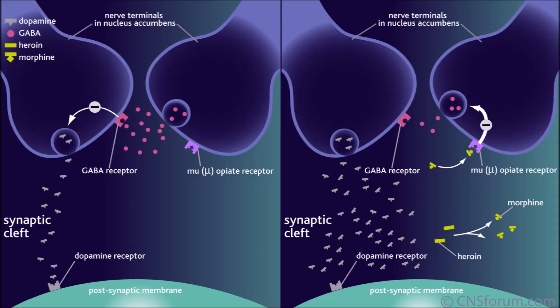The presynaptic neuron contains GABA neurotransmitters in its synaptic vesicles. The opioid receptor is attached to this presynaptic neuron containing the GABA. There are three types of opioid receptors found in the brain, named mu, kappa, and delta.